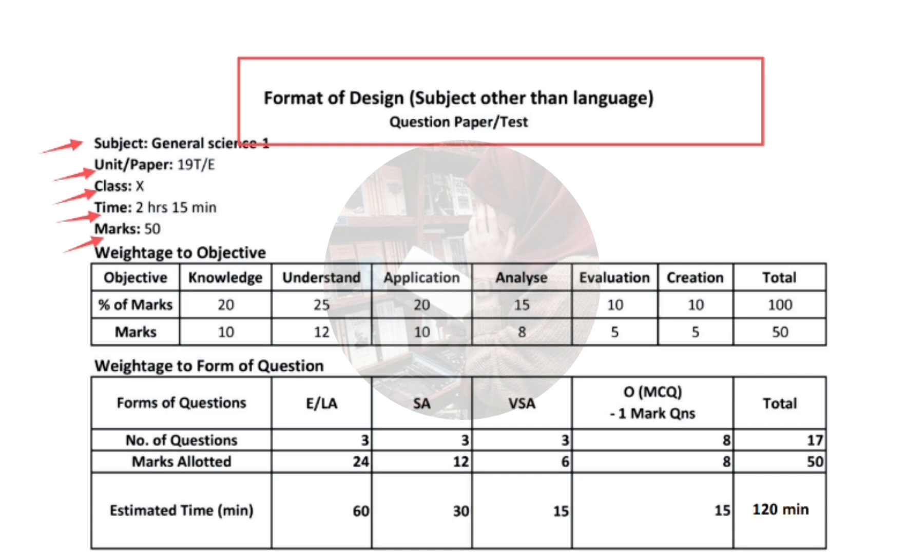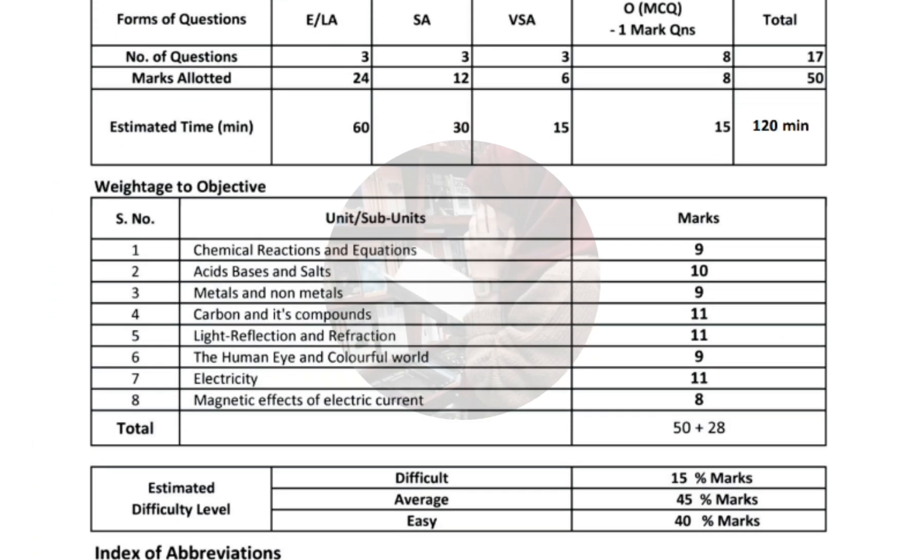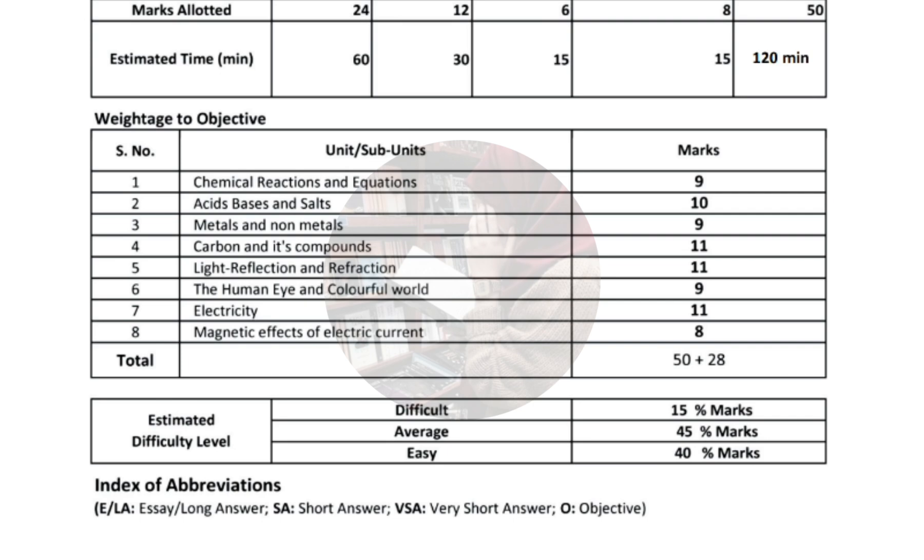Here we have given three separate tables. Please watch carefully. The first table is weightage of objective level, second table is weightage to form of questions, and the last table is weightage to objective.